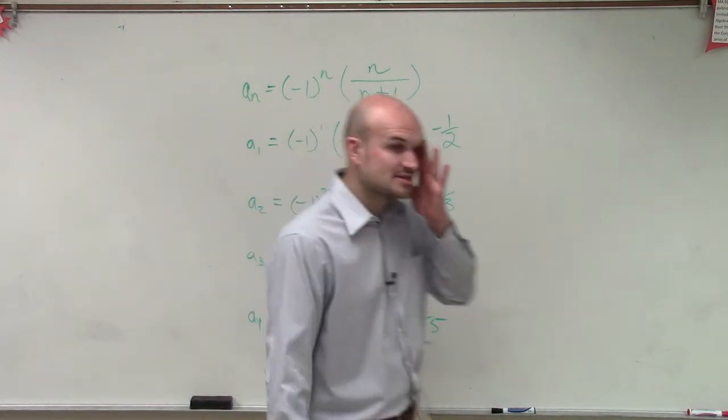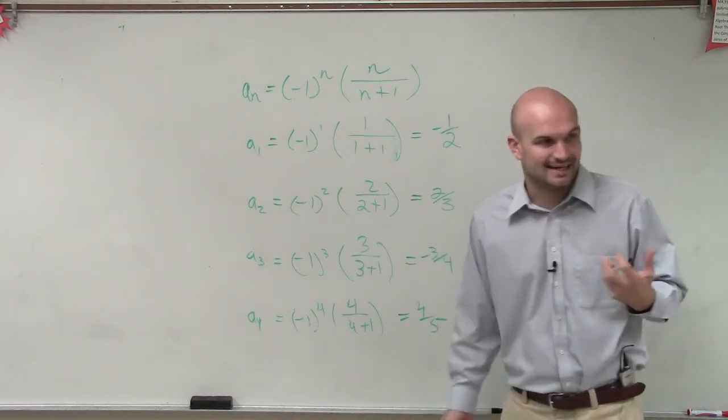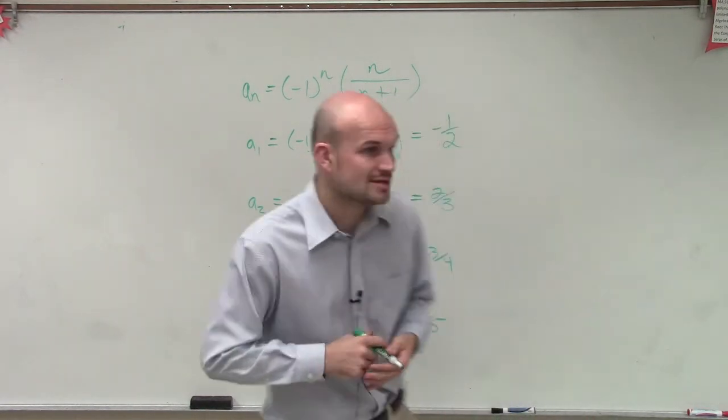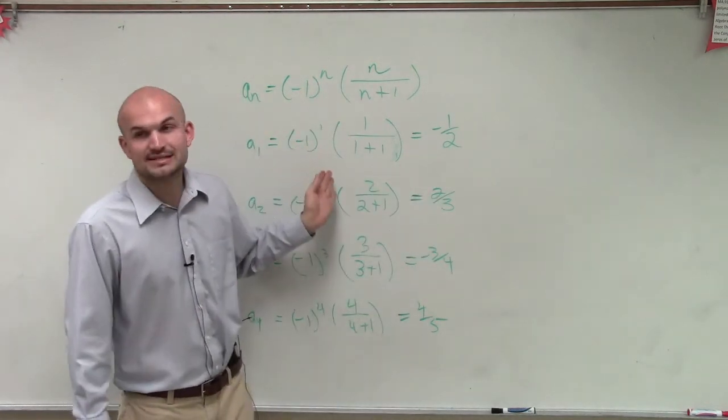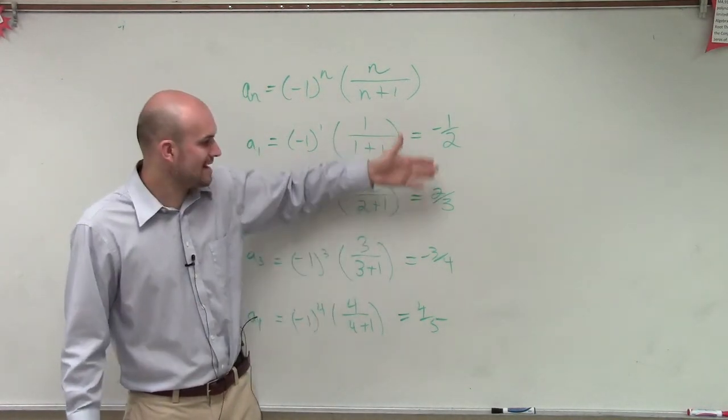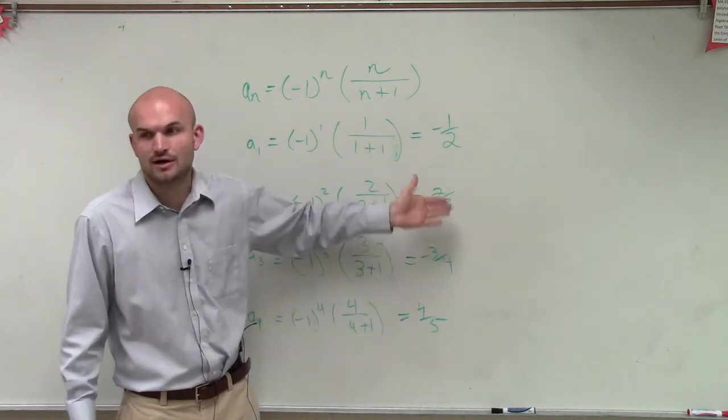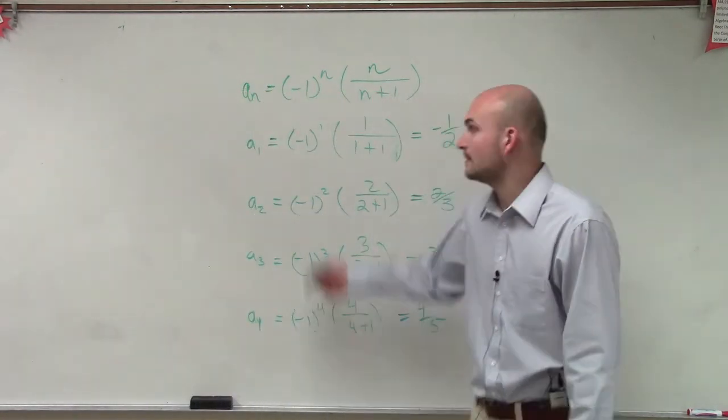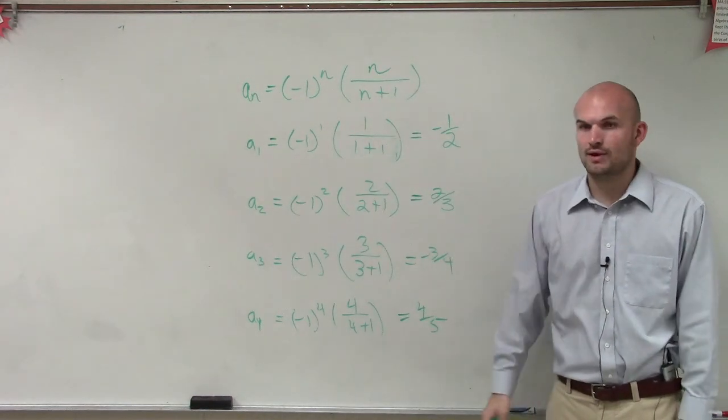And I just want to make sure you guys understand and see this, that the key to finding alternating signs or alternating values, a lot of times, is this negative 1 raised to an n power. And you can see how it alternates the signs. And this has become very important, especially when we need to find the rule. So there is an example for you.